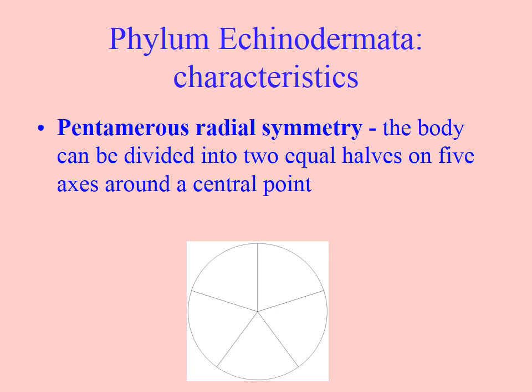We've talked about radial symmetry. Echinoderms have what's called pentamerous radial symmetry. If you look at the arms or radii of a starfish pattern, they can usually be divided into five equal portions, like slicing a pie or a pizza. However, they sometimes have more than five arms — usually a prime number: 7 or 11. But typically it's five.